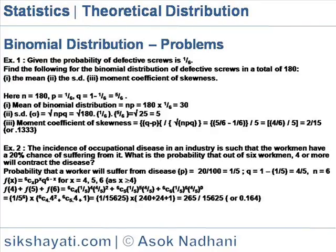Here n is equal to 180, p is equal to 1 by 6, so q is equal to 1 minus 1 by 6, is equal to 5 by 6. The mean of binomial distribution is equal to np, is equal to 180 into 1 by 6, is equal to 30.